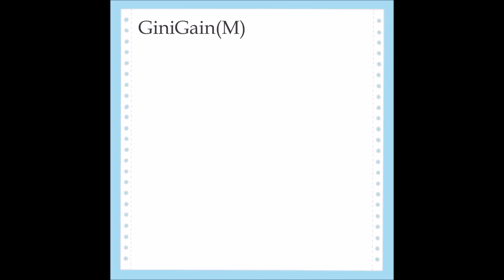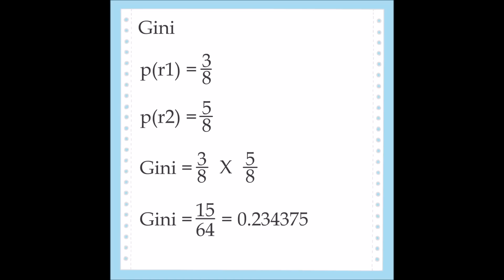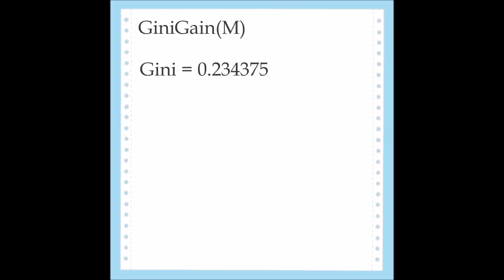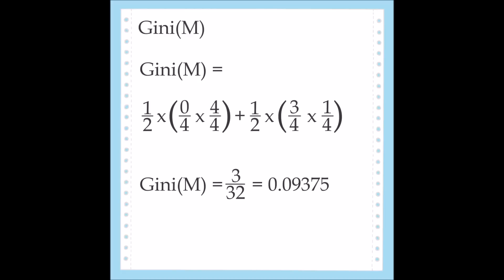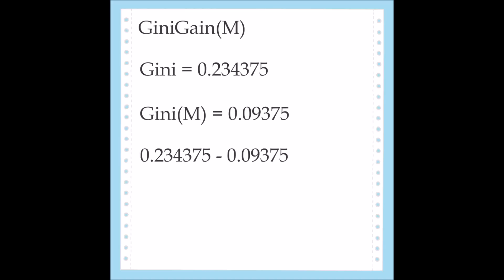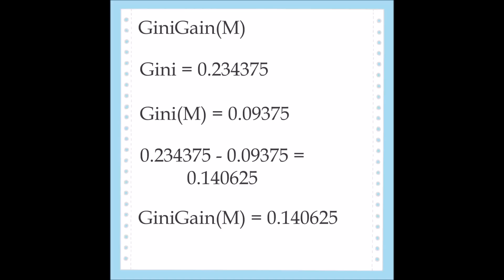After working out the Gini values for each attribute, the next step is to calculate the gain. The gain is what we use to determine the splitting attribute. To calculate the gain for M, we use the Gini calculation for the entire system, which we calculated earlier to be 0.234375. Next, we need the Gini value of M, which is 0.09375. Subtract the value of M from the value of the system as a whole. The gain of M is 0.140625.